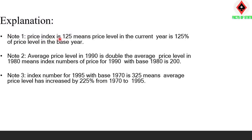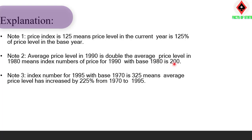Interpretation example: If price index is 125, it means that the price level in the current year is 125 percent of the price level in the base year — a 25 percent increment. If average price level in 1990 is double that of 1980, the index number with base 1980 is 200 — meaning if sugar was 100 rupees per kg in 1980, it became 200 rupees in 1990. If index number for 1995 with base 1970 is 325, average price level increased by 225 percent from 1970 to 1995.